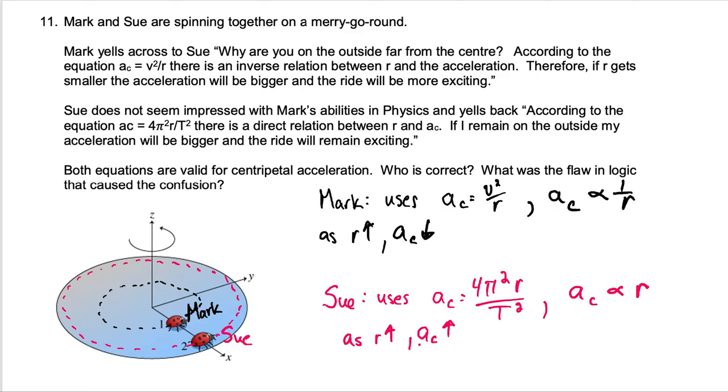Now they both represent the same thing, it's just two different ways of calculating the centripetal acceleration. So somebody's got to be right and somebody's got to be wrong. Now if we look at the ride itself, the merry-go-round itself, if I look at Sue's ride versus Mark, Sue follows this dotted line along the outside. She describes a very big arc as she moves around in one complete circle.